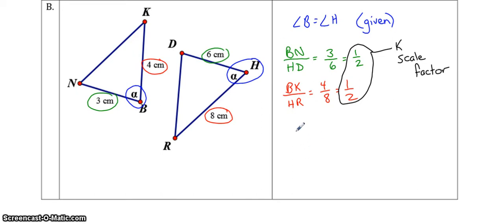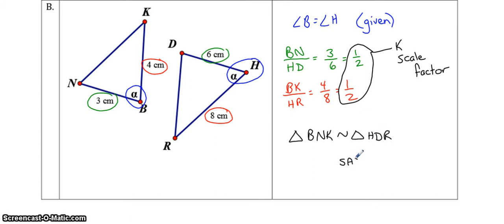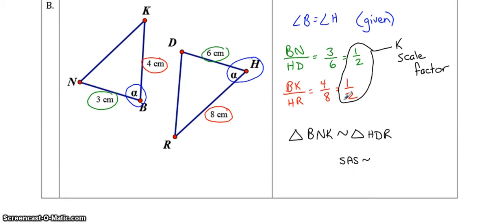What we have done is proved that triangle BNK is similar to triangle HDR. Make sure you get the letters right — we're starting where the angle is, going down the smallest side to D, and then to the third vertex R. So H, D, R. The reason is side-angle-side similarity. This is your proof, this is the similarity statement, and this is the sufficiency condition. Make sure when answering these questions that you show the full proof, showing that the ratios are the same, what your K value is, and providing everything here.